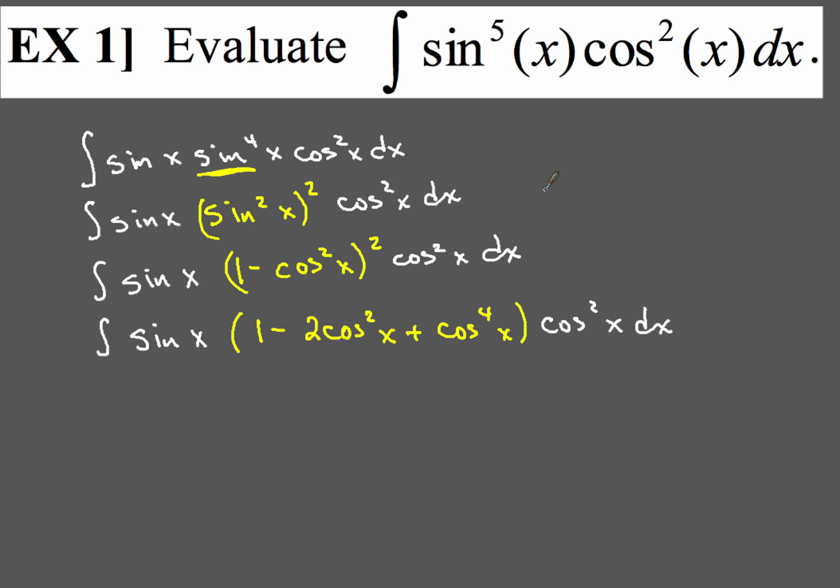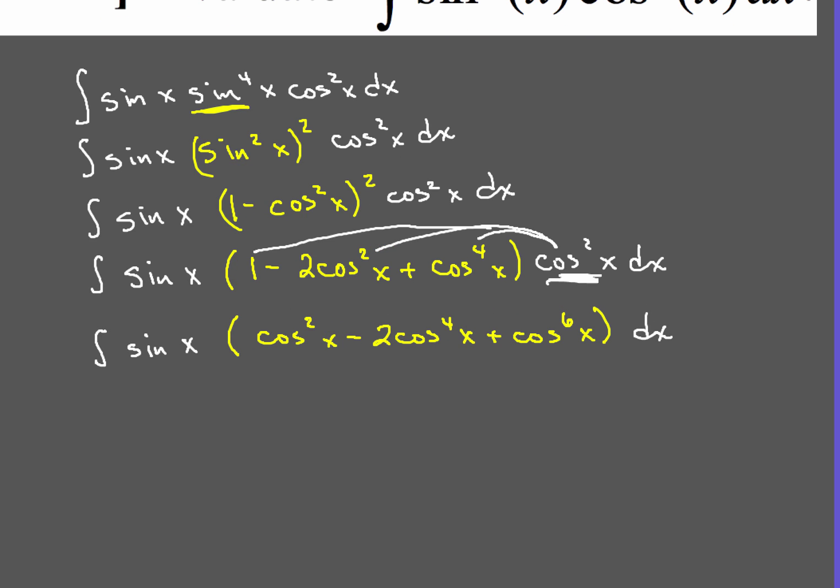So, after we've expanded the 1 minus cos squared x squared, that whole quantity, next, what we're going to do is we're going to take this cos squared right here on the outside over to the right and we're going to distribute that to each term here in the parentheses. We're going to have the integral of sin x and then all the other bloppity-blop there that's in yellow. And don't forget the dx at the end of it.